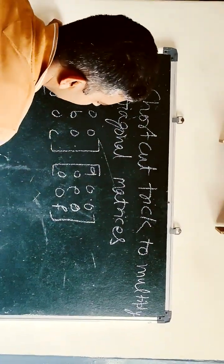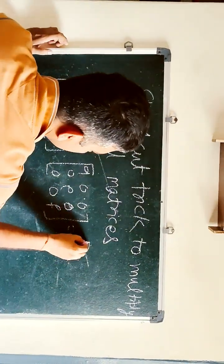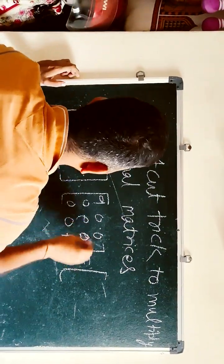Can you multiply these two matrices in 5 seconds? If not, I will tell you how to multiply. Just multiply these diagonal elements. For example: